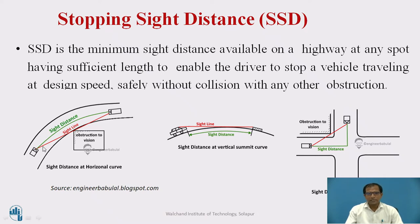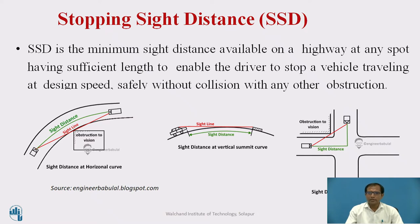We can consider three cases to understand stopping sight distance. It is simply the distance available for any driver in front of him to take proper action before meeting any object or any vehicle without having any collision.